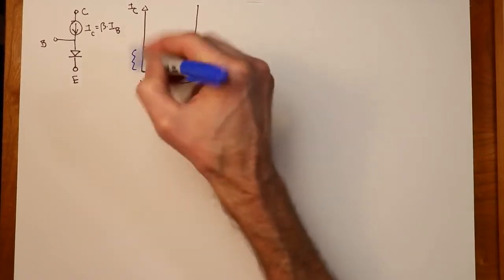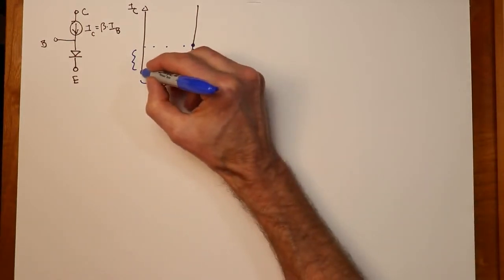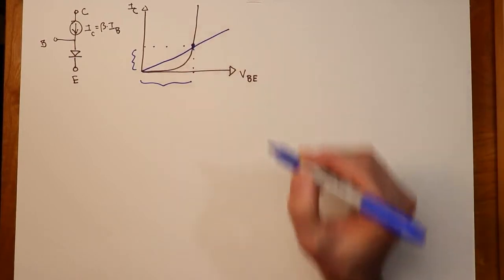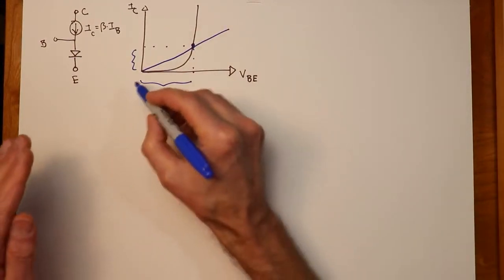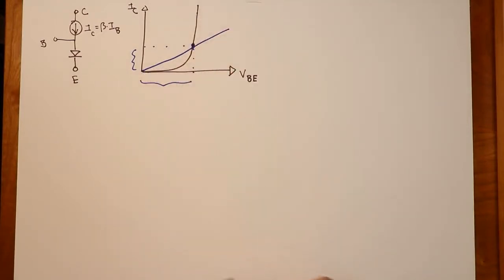right, VBE over IC, we could get basically a resistance value. If you wanted to plot that, you get something that kind of goes like that. And as we would bias this higher and higher, if we were up here, then that would be that much steeper. So that would indicate a smaller resistance.